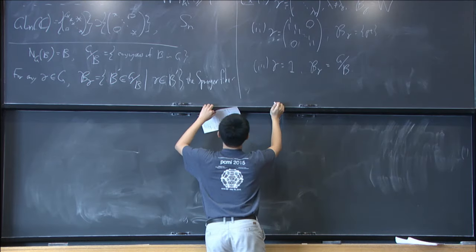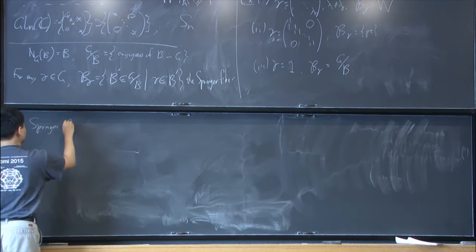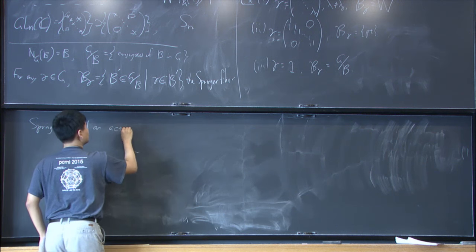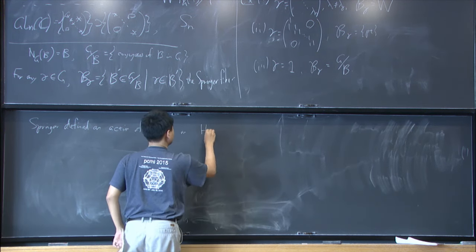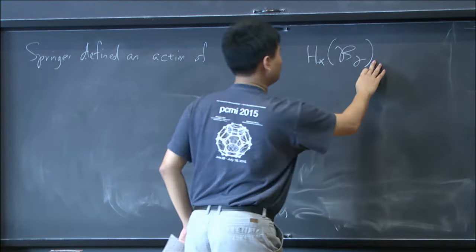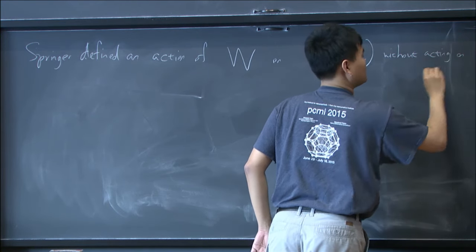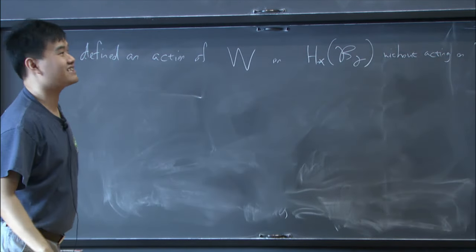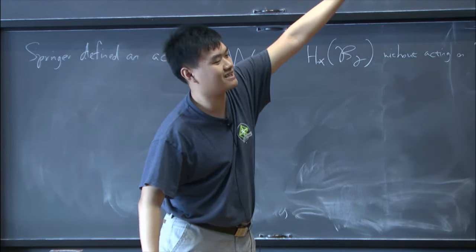Then Springer and possibly others in this generality define an action of S_N, the Weyl group, so S_N in our case of GL_N, on the homology of these Springer fibers, without necessarily acting on the variety itself. So without acting on the variety itself. In the first two examples, the action is sort of clear. In the first example, you can let the Weyl group act by translation on the Weyl group itself. This action is canonical, despite that that identification was not.